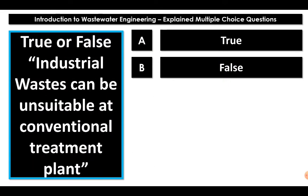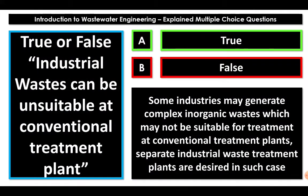State whether true or false: industrial waste can be unsuitable at a conventional treatment plant. The statement is true. Many manufacturing plants and industries do generate complex inorganic waste which is not suitable for treatment at conventional treatment plants. That's why we need separate industrial waste treatment plants for such specific kinds of industrial waste.